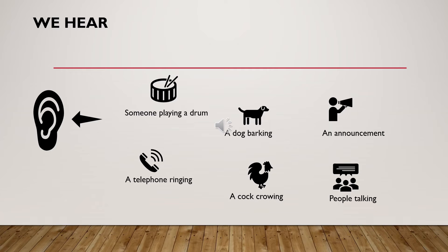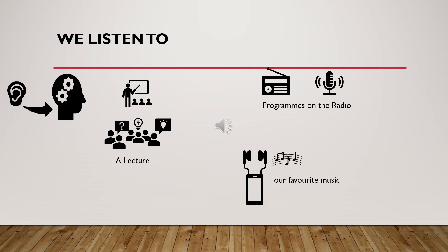Other examples of hearing: a dog barking in the street, a cock crowing, a crow, a bird singing — we hear these. Also, we hear people talking when they are at a distance from us. Another example is an announcement. These are all things that reach our ears automatically. Hearing is passive — the sound simply reaches your ears.